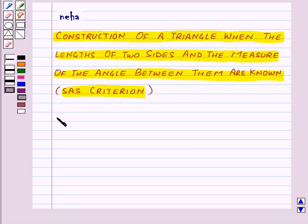Let us construct a triangle ABC in which AB is equal to 5 cm, AC is equal to 4.3 cm, and angle A is equal to 60 degrees.